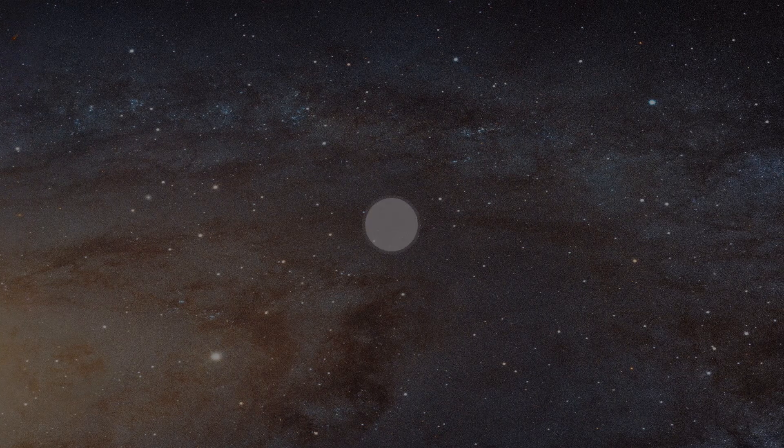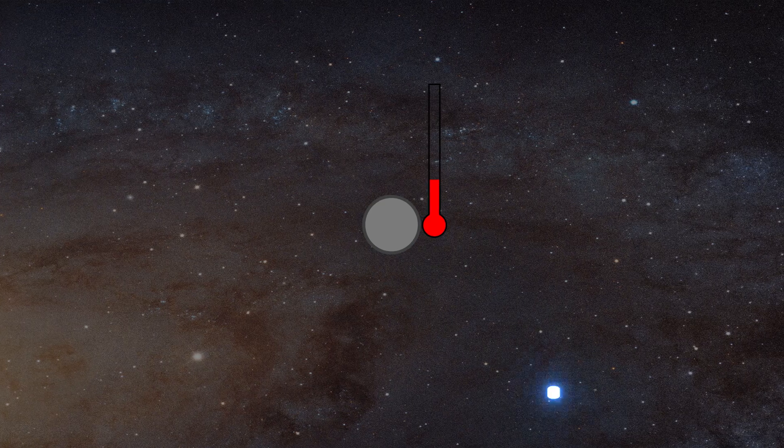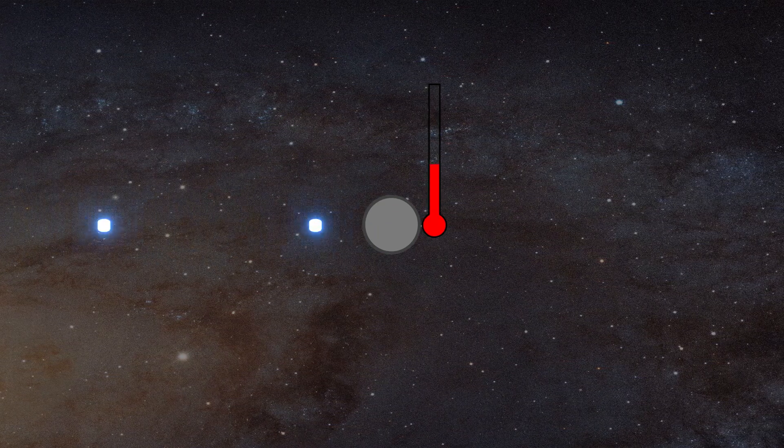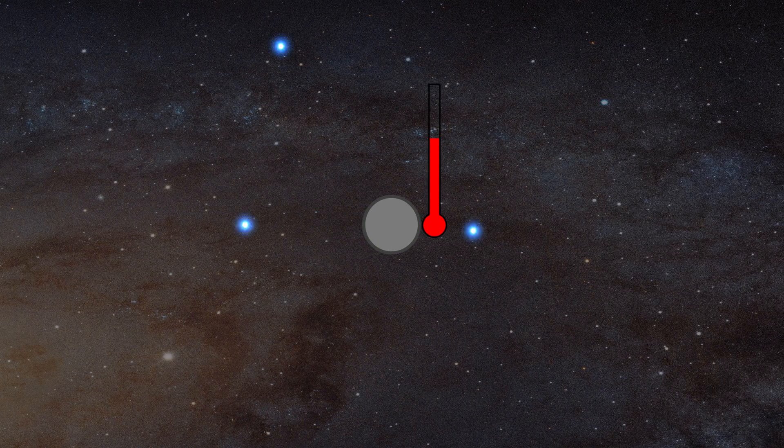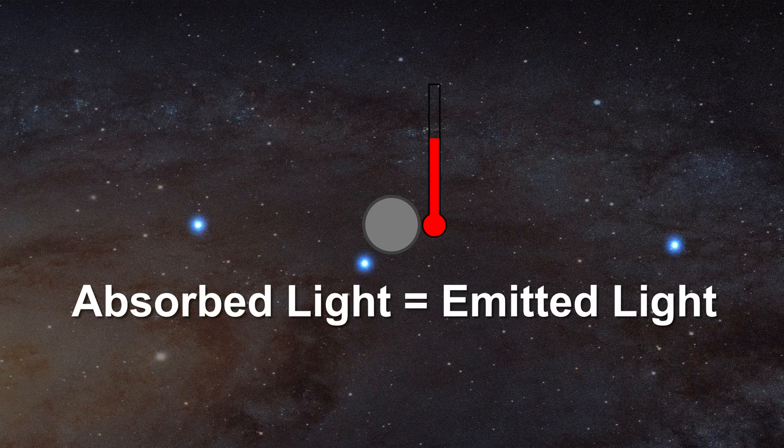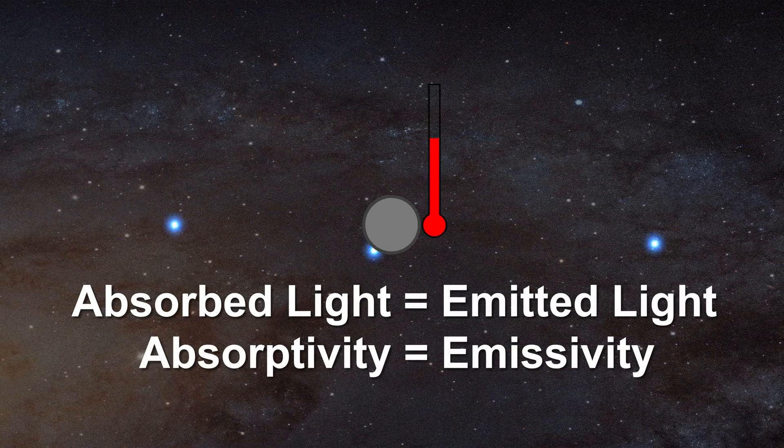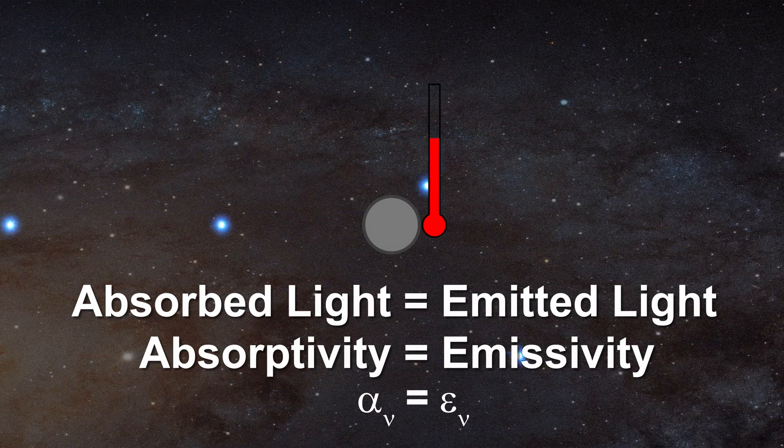Now, if an object interacts with incoming light and does not change its temperature, it must be emitting as much energy as light as it had absorbed, otherwise its temperature would change. Therefore, in thermal equilibrium we can also write that absorbed light equals emitted light. Once again, we can divide by the total light in the system and write that the absorptivity is equal to the emissivity.